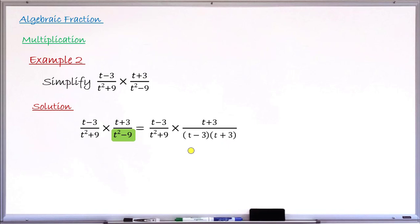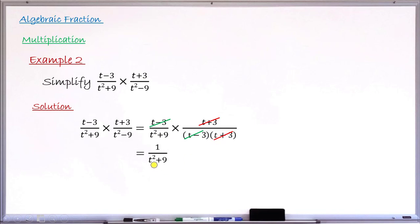Step two: check for common factors. I have (t − 3) in the numerator and (t − 3) in the factored denominator — they cancel to give 1. I also have (t + 3) in the numerator and (t + 3) in the denominator — they cancel to give 1 as well. What remains at the numerator level is 1 × 1 = 1, and at the denominator level is (t² + 9) × 1 × 1 = t² + 9. So the final result is 1 over (t² + 9).